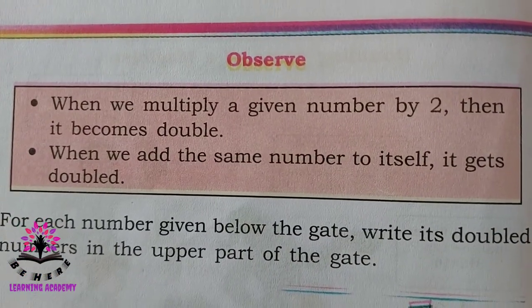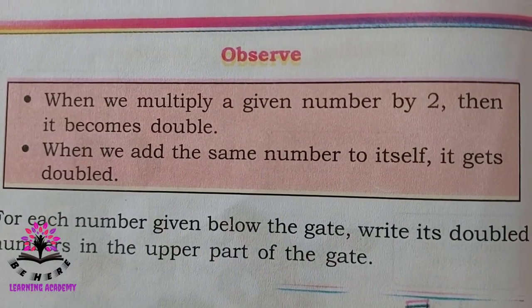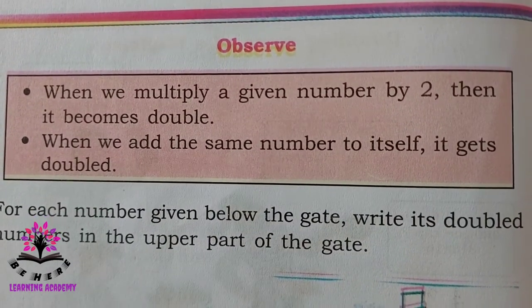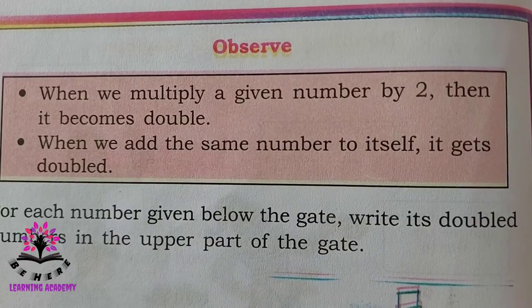When we multiply a given number by 2 then it becomes double. When we add the same number to itself it gets doubled.